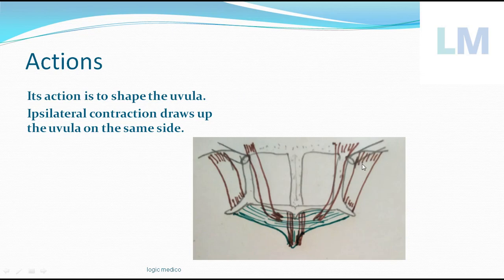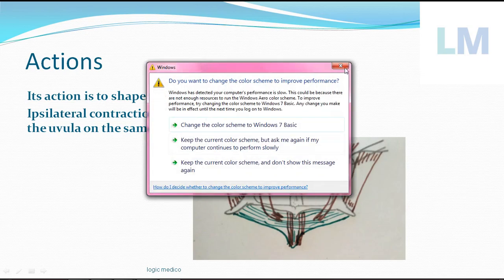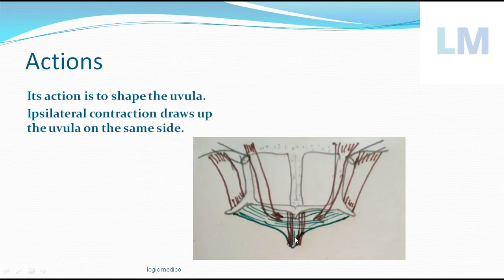Whenever the other muscles of the soft palate are elevating and anchoring the soft palate, Musculus Uvulae acts as an anchorage point at the junction between the nasopharynx and oropharynx.